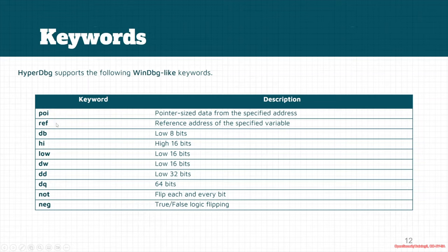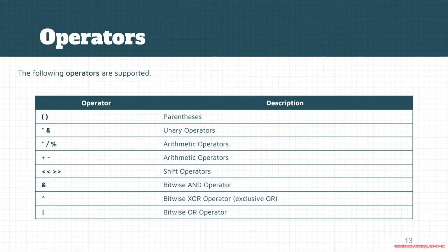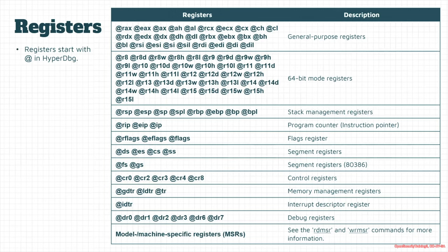Most of these are the same keywords used in WinDbg, except for 'ref' which is used for referencing a variable — getting a pointer to it — and is used mainly in functions like spinlock and others. The operators supported by HyperDbg are listed here by precedence and can be used in your scripts. It's pretty self-explanatory.